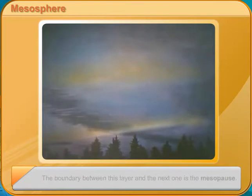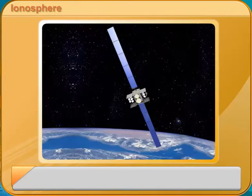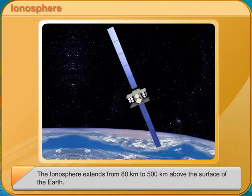The exosphere is the outermost layer of the atmosphere. The air becomes thin here and merges into outer space. The temperature increases rapidly in this layer due to higher solar radiation.